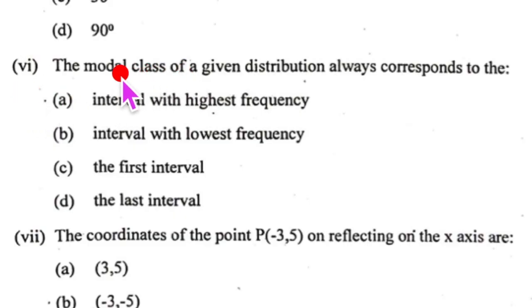Number 6. The modal class of the given distribution always corresponds to. Now the class which will have the mode. The mode means the interval with the highest frequency. There is highest frequency here. None of these are pertaining to that. So the answer is A.